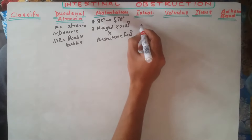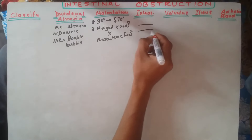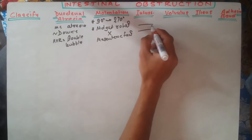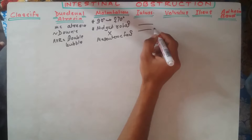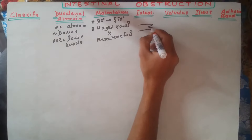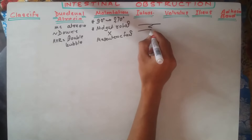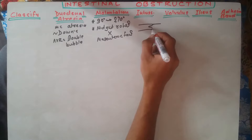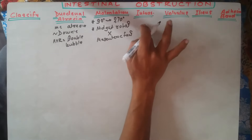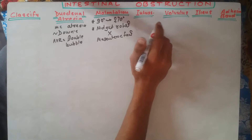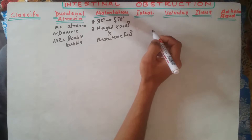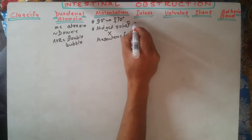In intussusception, there is invagination of an intestinal segment into the adjoining intestinal lumen. The distal part goes inside the proximal intestinal lumen. It is usually seen in children. The definition of intussusception is the process of invagination of an intestinal segment into the adjoining intestinal lumen.